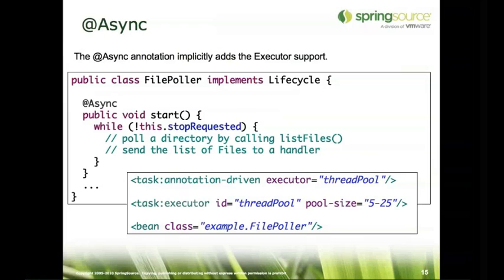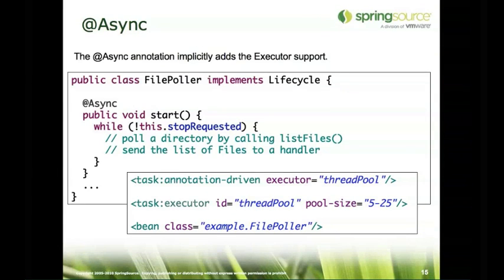That still seems like a lot of code to deal with. For convenience, we also provide an annotation-based approach using the @Async annotation. With @Async, a proxy is generated that invokes the method within a task executor internally. When you call start on the proxy, it invokes the target start method within the executor. All we need to do is add the annotation-driven element and point to the thread pool task executor we want to use.